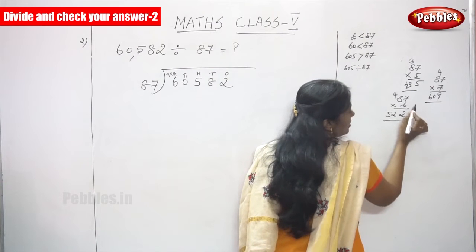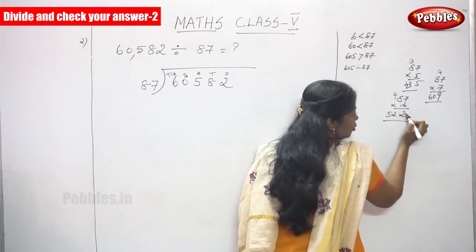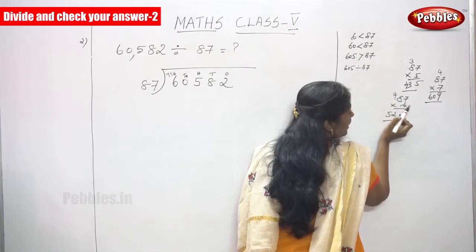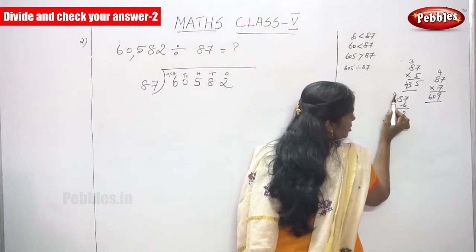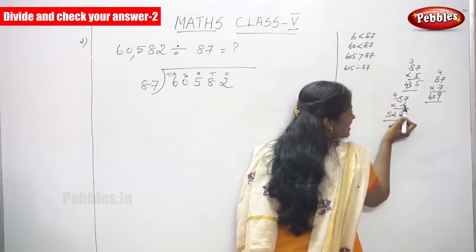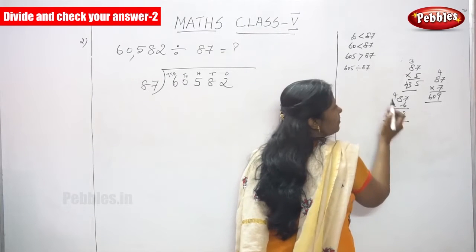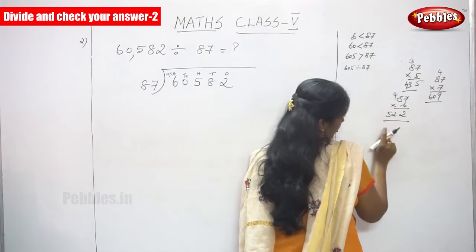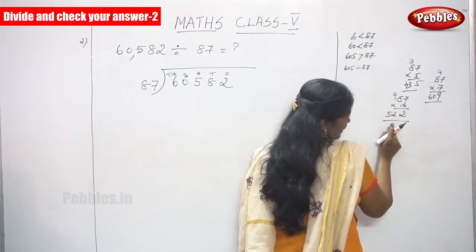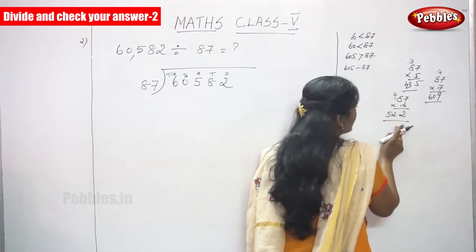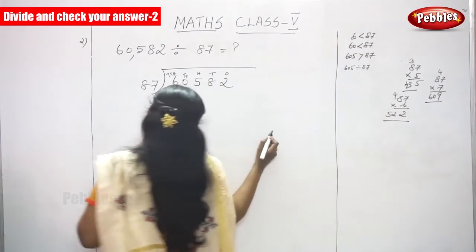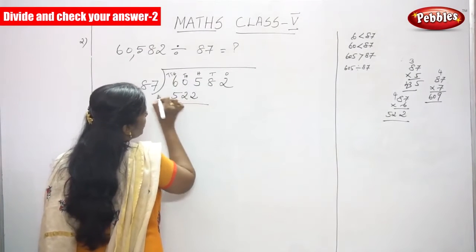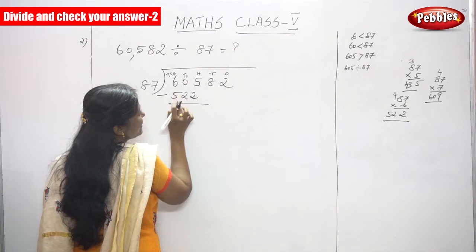I will repeat again. 6 sevens are 42 — the remaining goes to the top as carry over. 6 eights are 48, 48 plus 4: 49, 50, 51, 52. What is the answer? That is 522. Write the number 522, because it is less than 605.